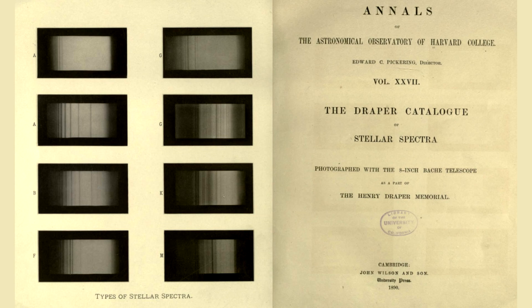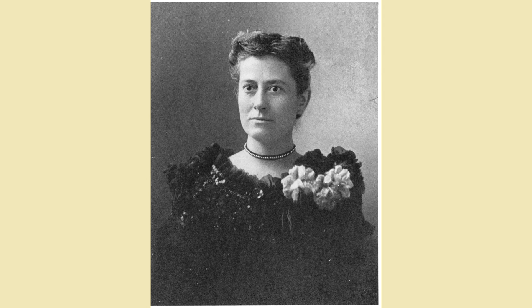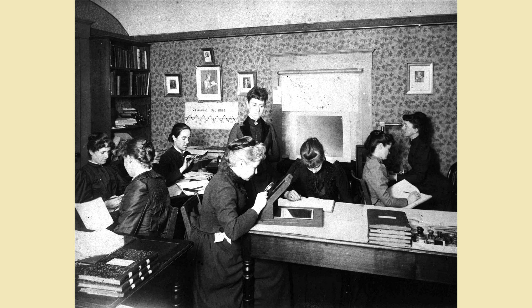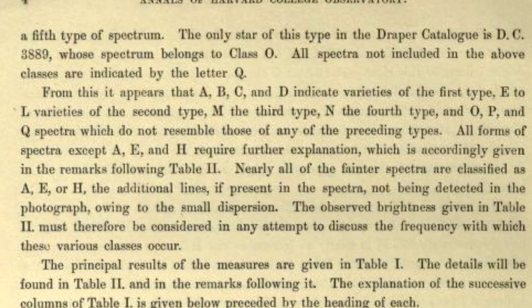A couple of decades later, a team started working on what would be called the Henry Draper Memorial Catalogue. There was a guy called Pickering, but more importantly, there was a person on his team called Wilhelmina Fleming. She was doing most of the spectra work and decided that Secchi's classes were just far too coarse. So she further divided Secchi's classes — Class One, for example, included the letters A through D.